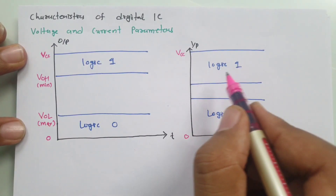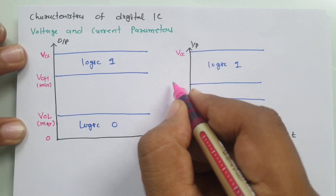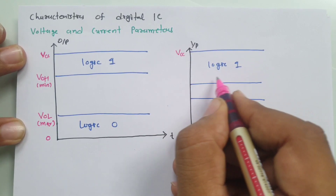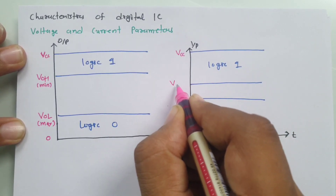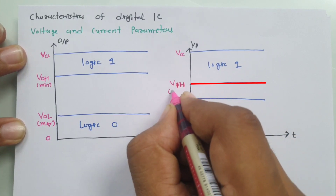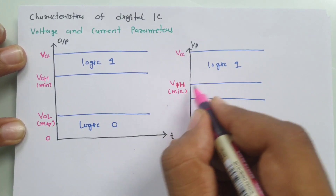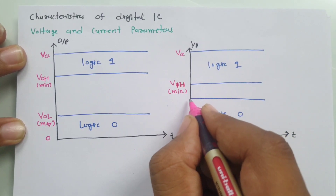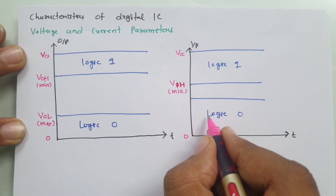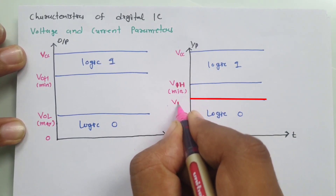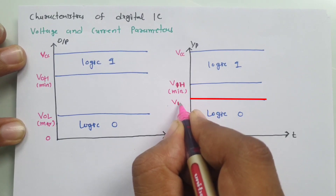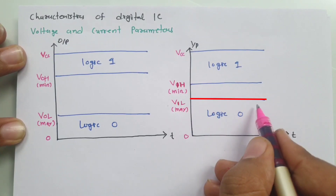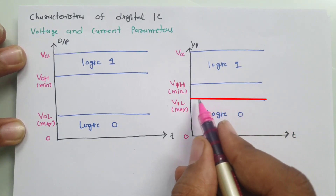Similarly for the input, this voltage boundary defines logic 1 with minimum voltage. So this is VIH minimum — it is the minimum voltage required at the input to have logic 1. And this voltage boundary is for logic 0, so that is VIL max — it is the maximum input voltage required to have logic 0.